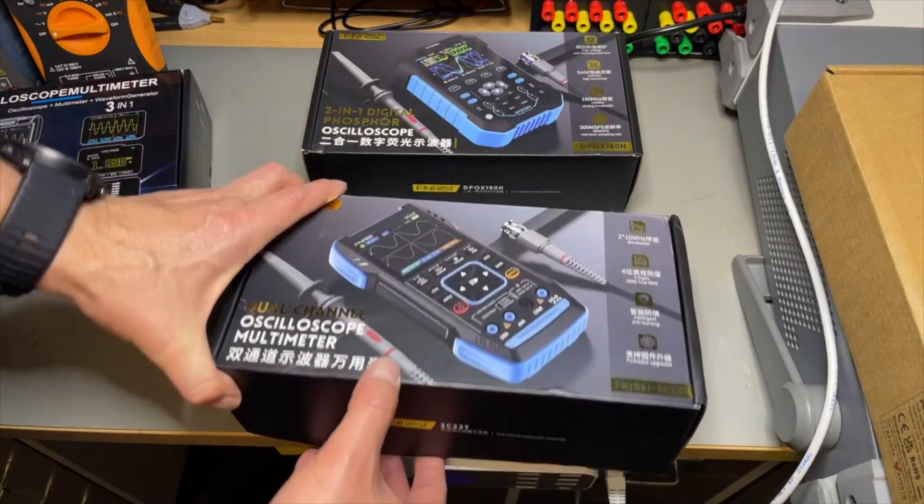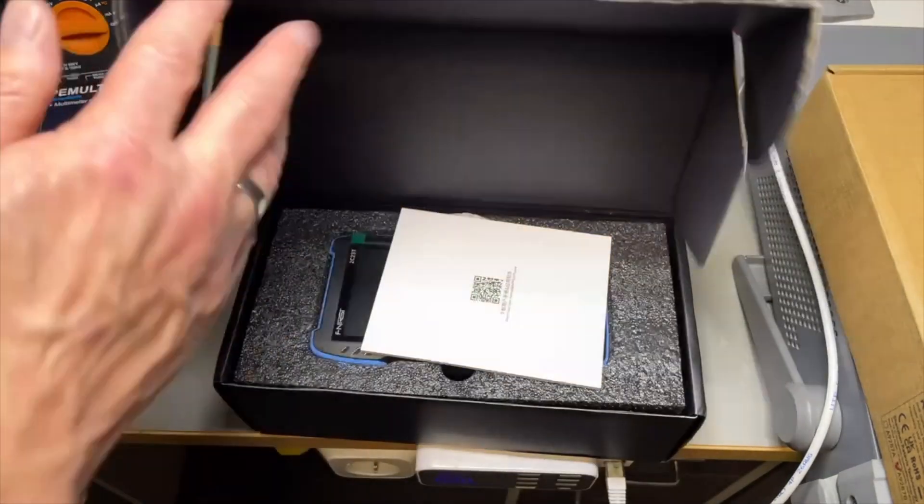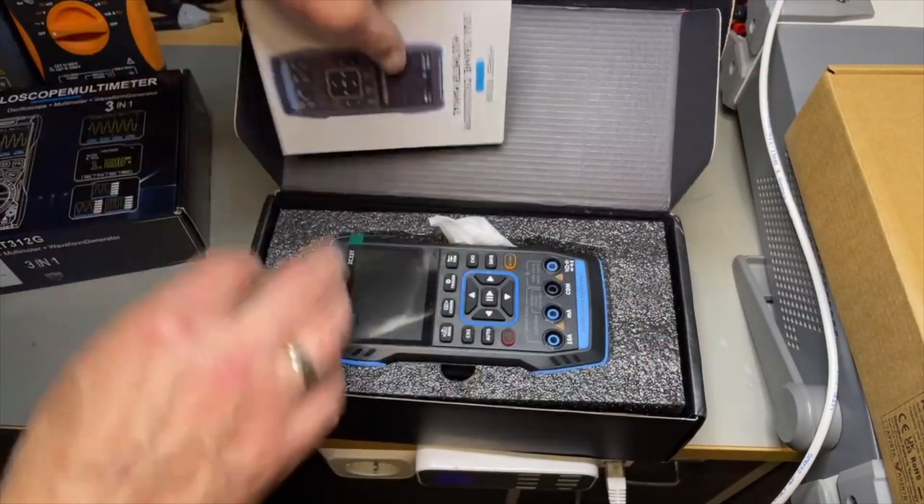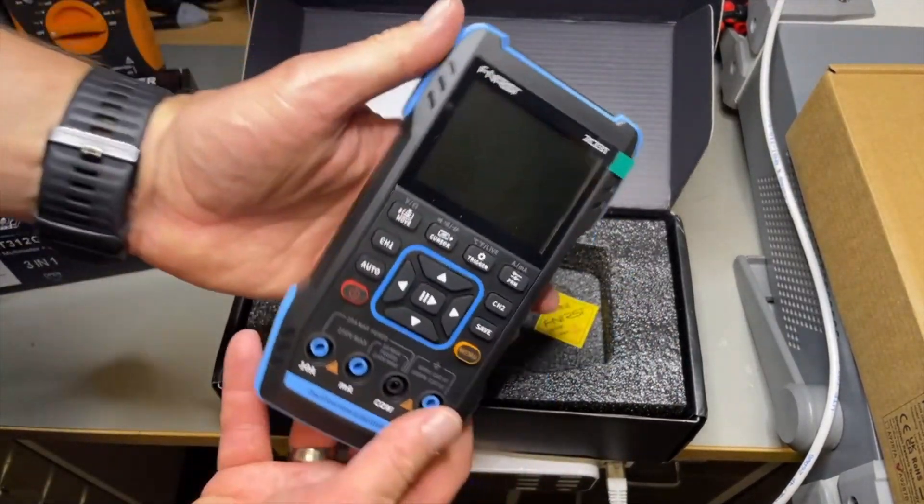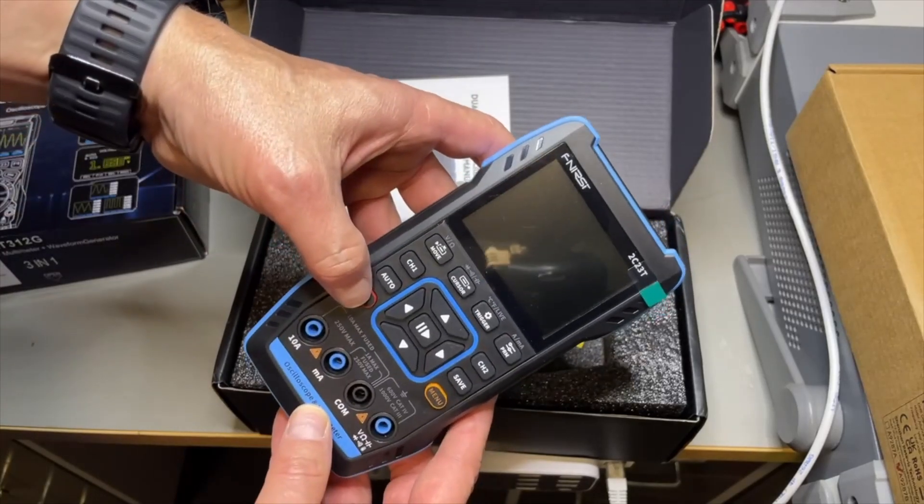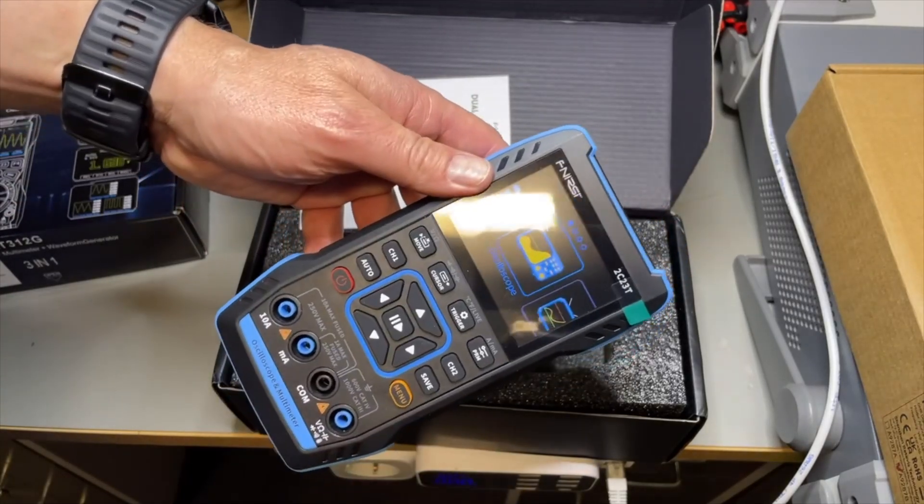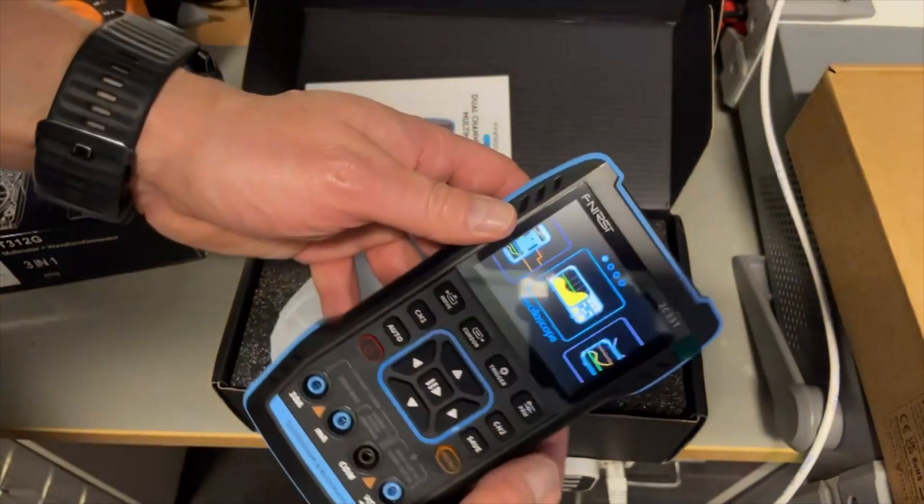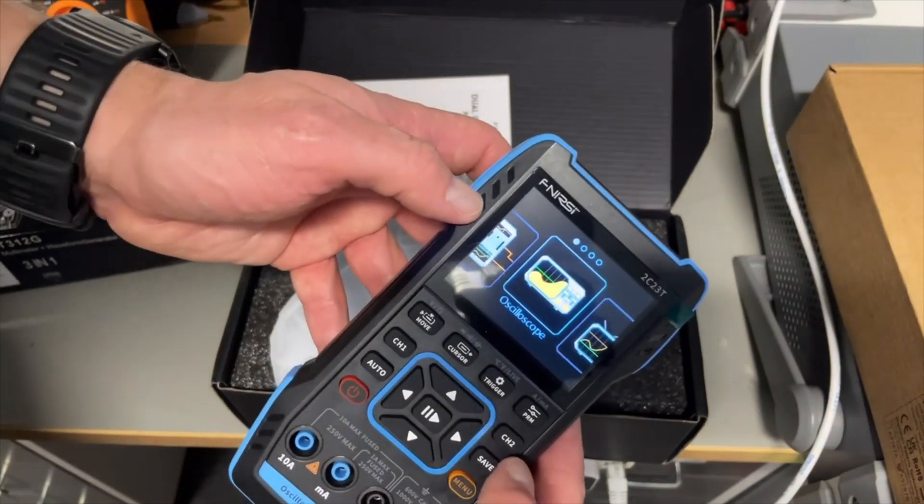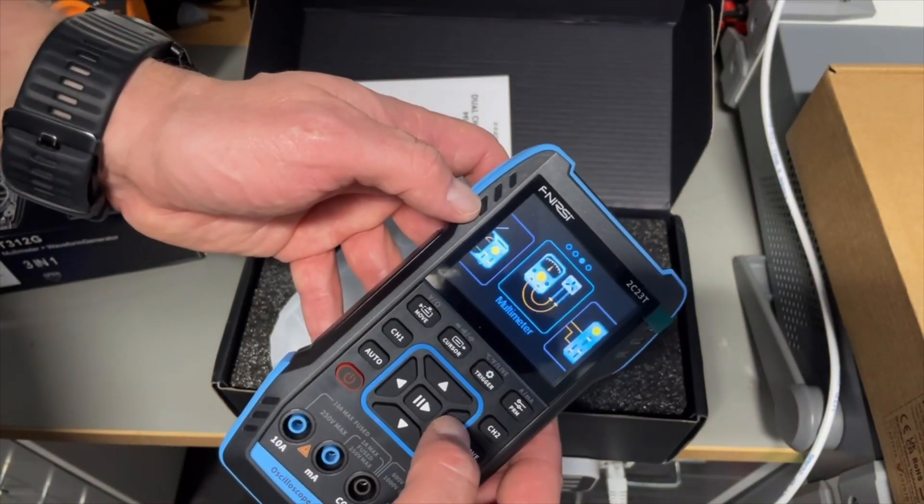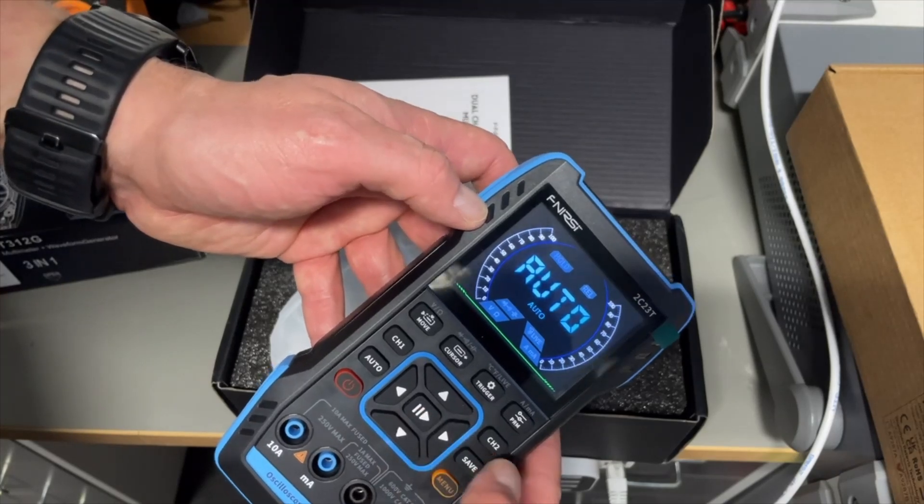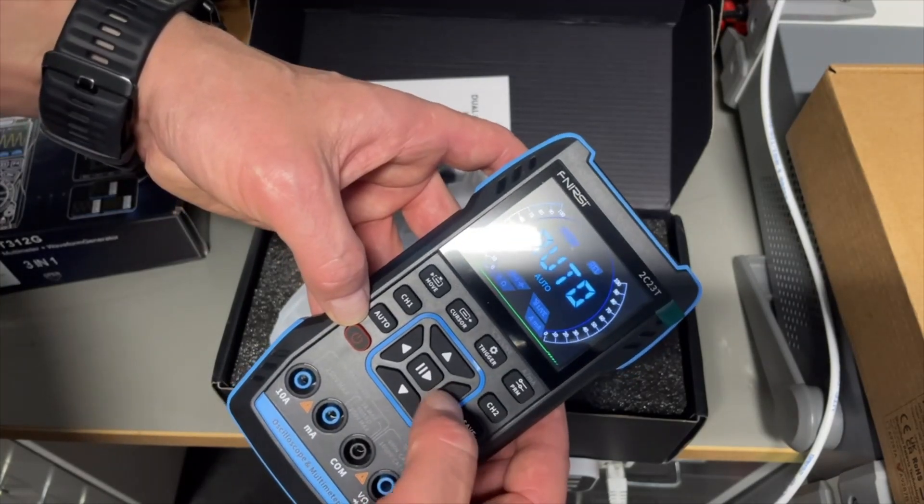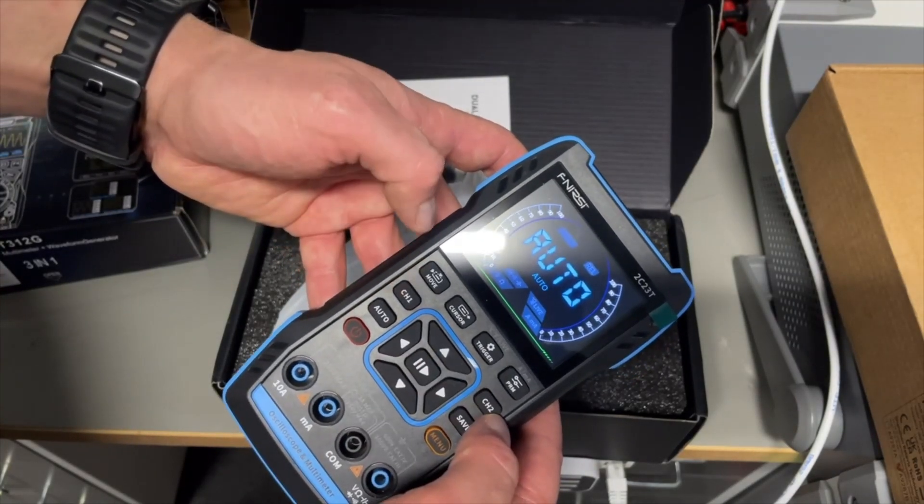From Vnerzy. This is the more simple Vnerzy. It's also an oscilloscope multimeter. Switch it on. Here we select what we want to do. Oscilloscope, signal generator, or multimeter.